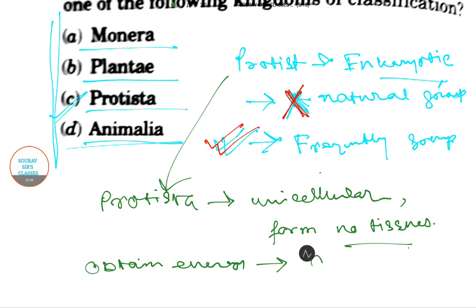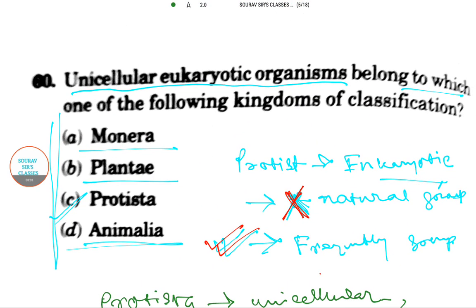So Protista is the correct answer, as it satisfies all the conditions: unicellular eukaryotic organisms that belong to this kingdom.